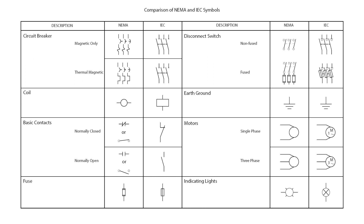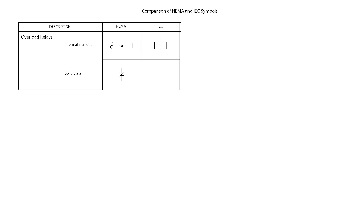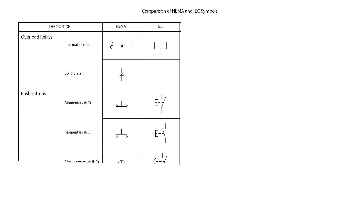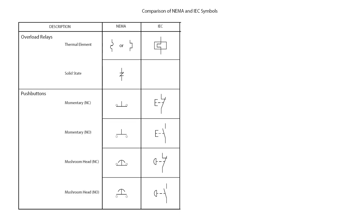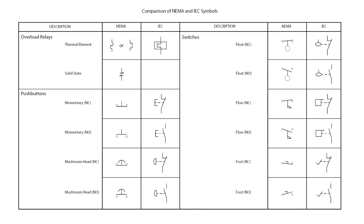Let's keep moving and learning about other symbols. The first set of symbols in this table are the overload relays — we have the thermal element and the solid state. Here are the symbols for the push button. There are different types, but the push button consists of only two states: either normally open or normally closed. There are several types of switches, but like the push button they consist of only two states — also either normally open or normally closed. In this table we have the float, flow, and foot switches, and in the upcoming table we will see a couple more switches.